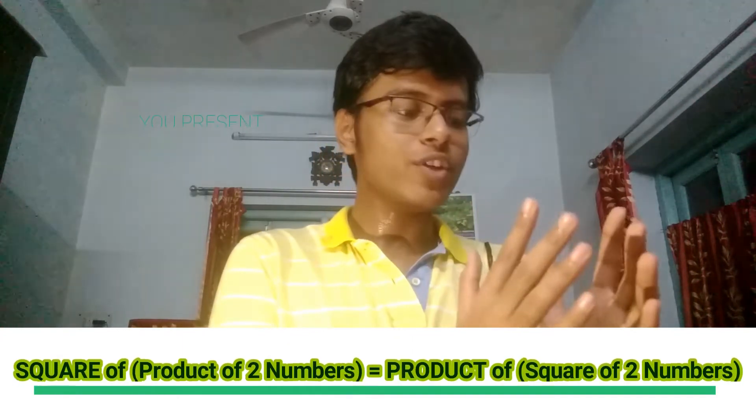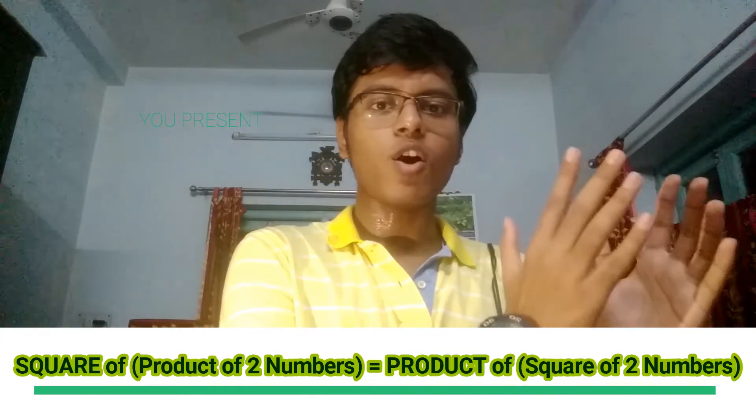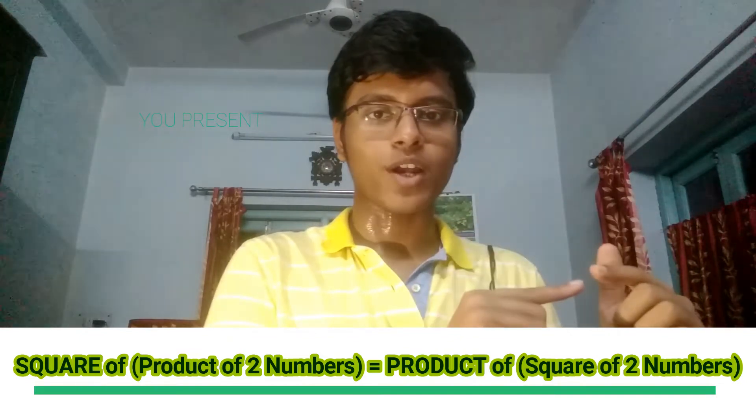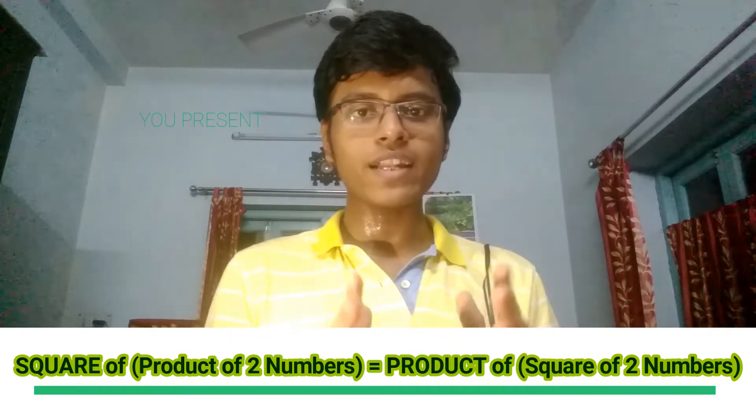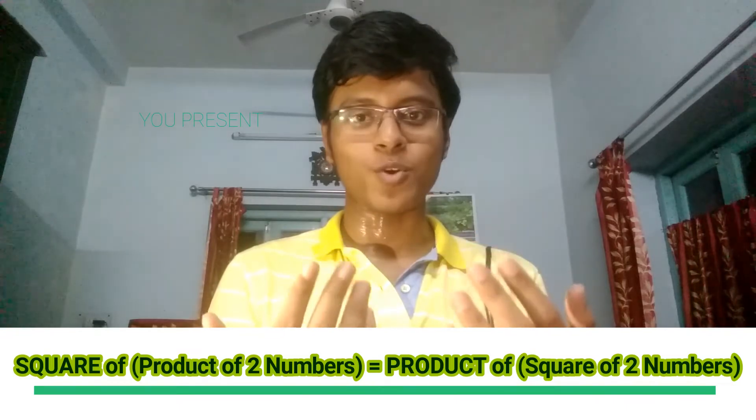Conclusion which we can derive from here is that the square of product of two numbers equals the individual squares of two numbers and performing their product. So having said that now let us move to the proof to see how this further goes.